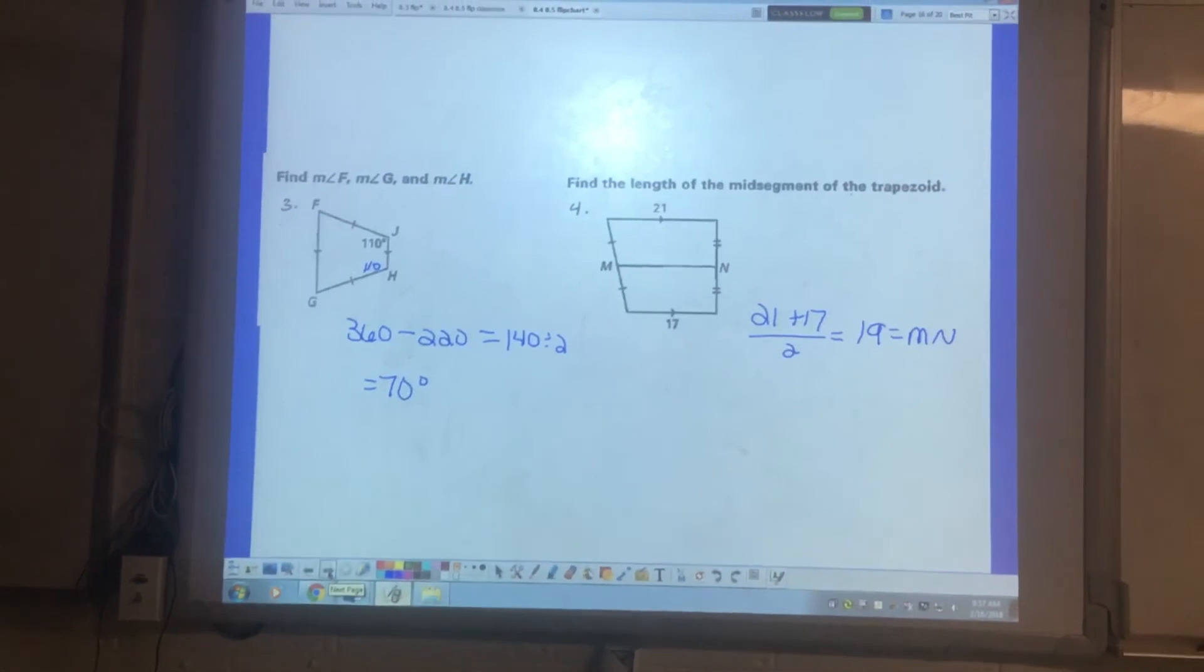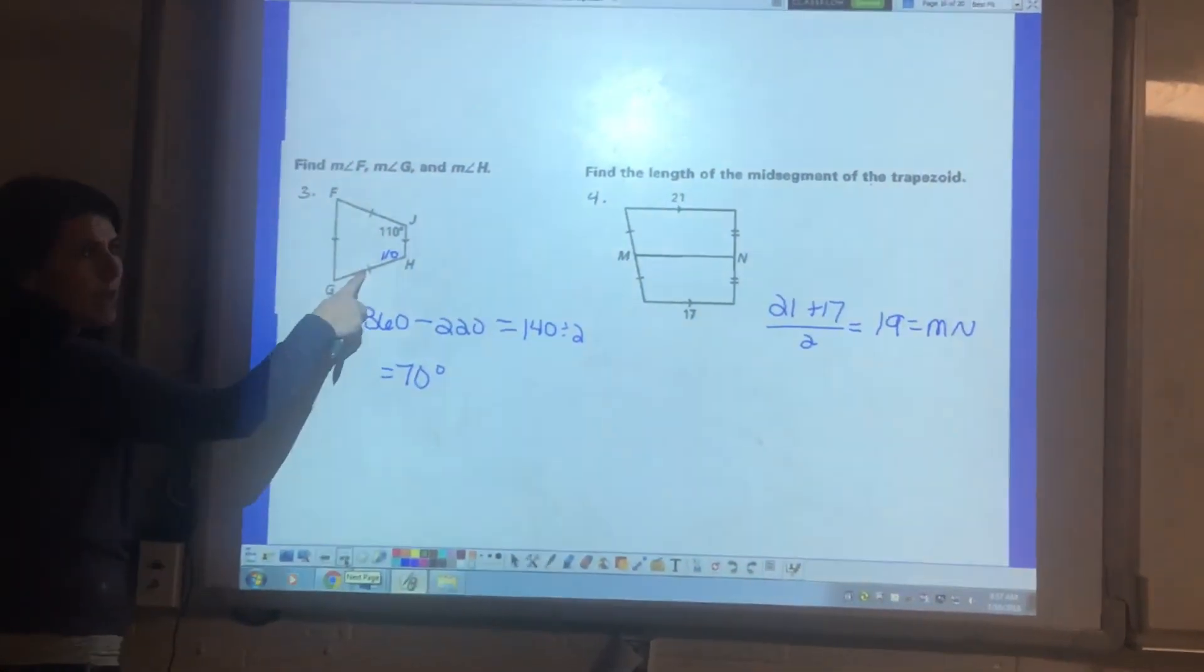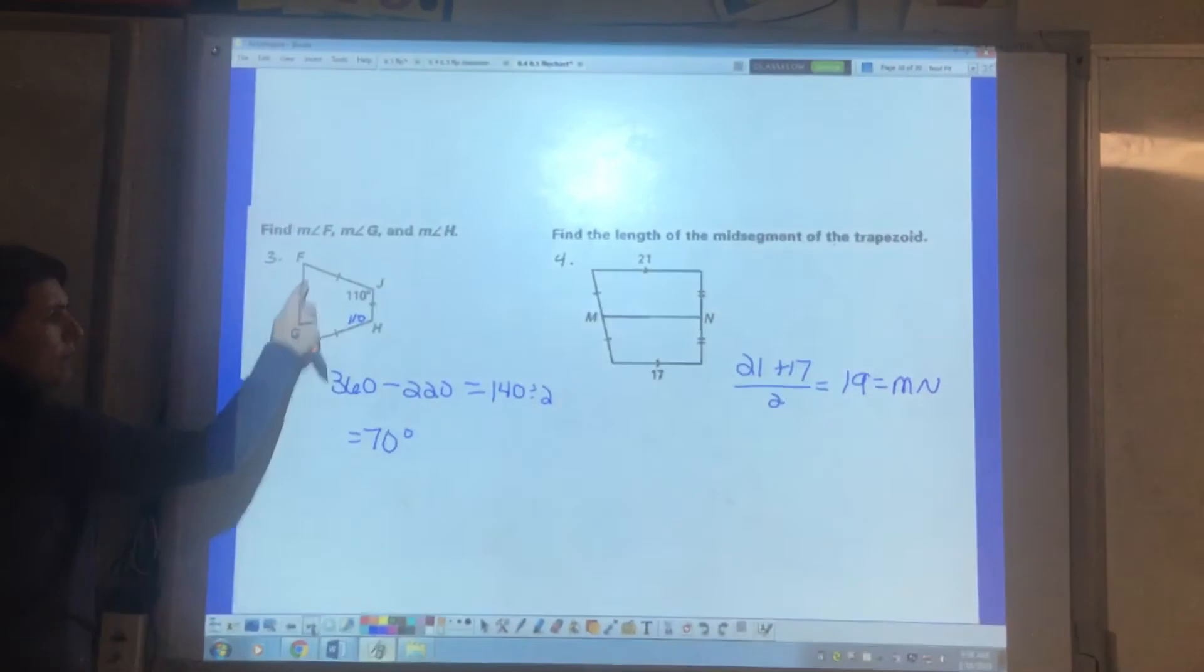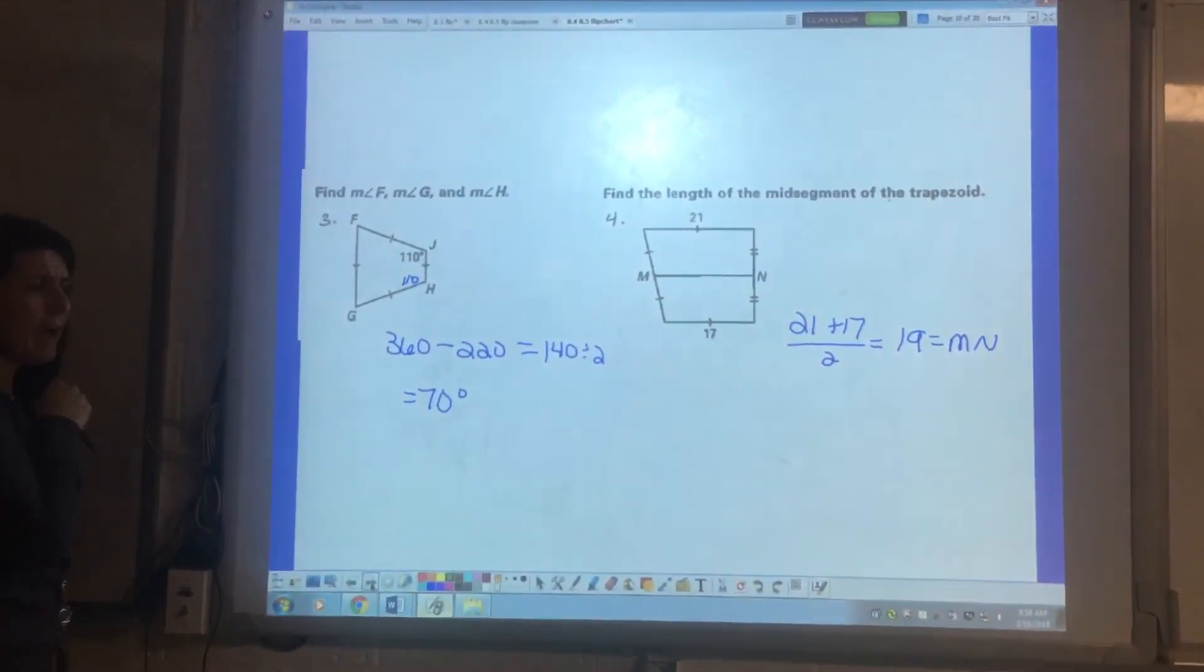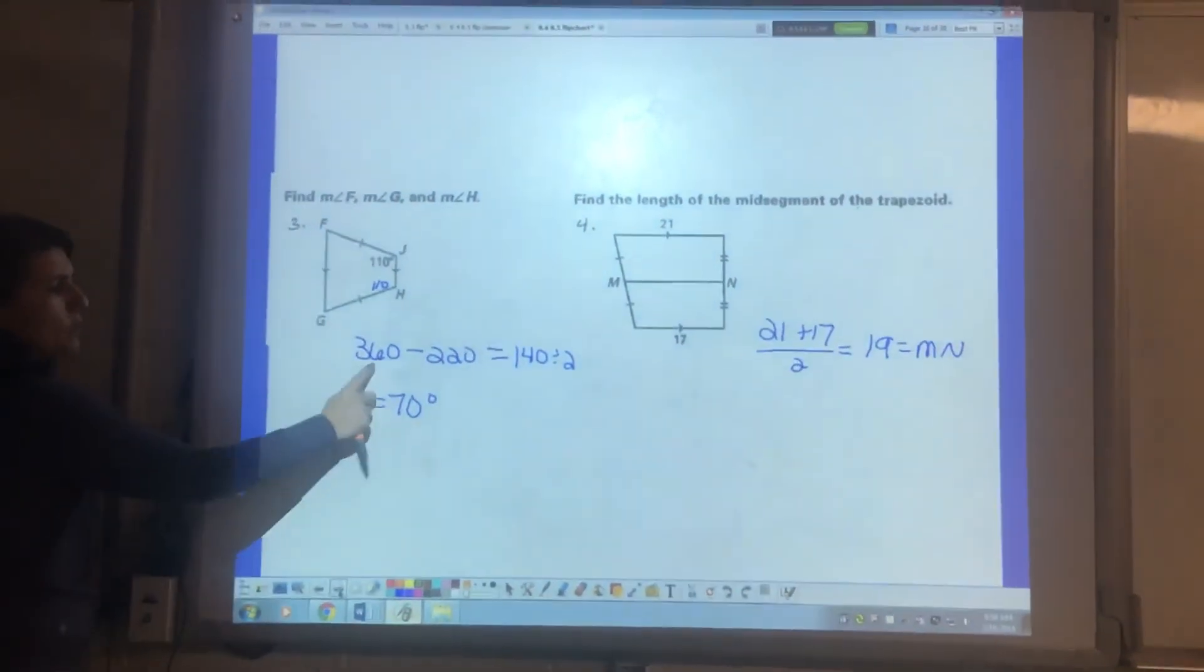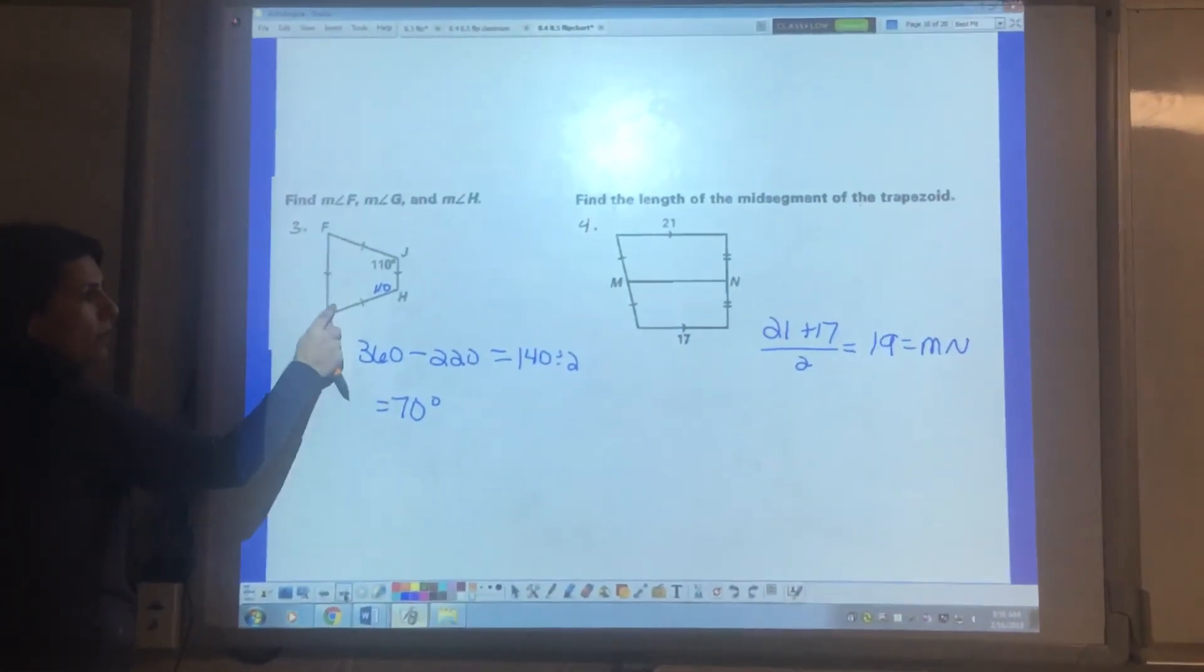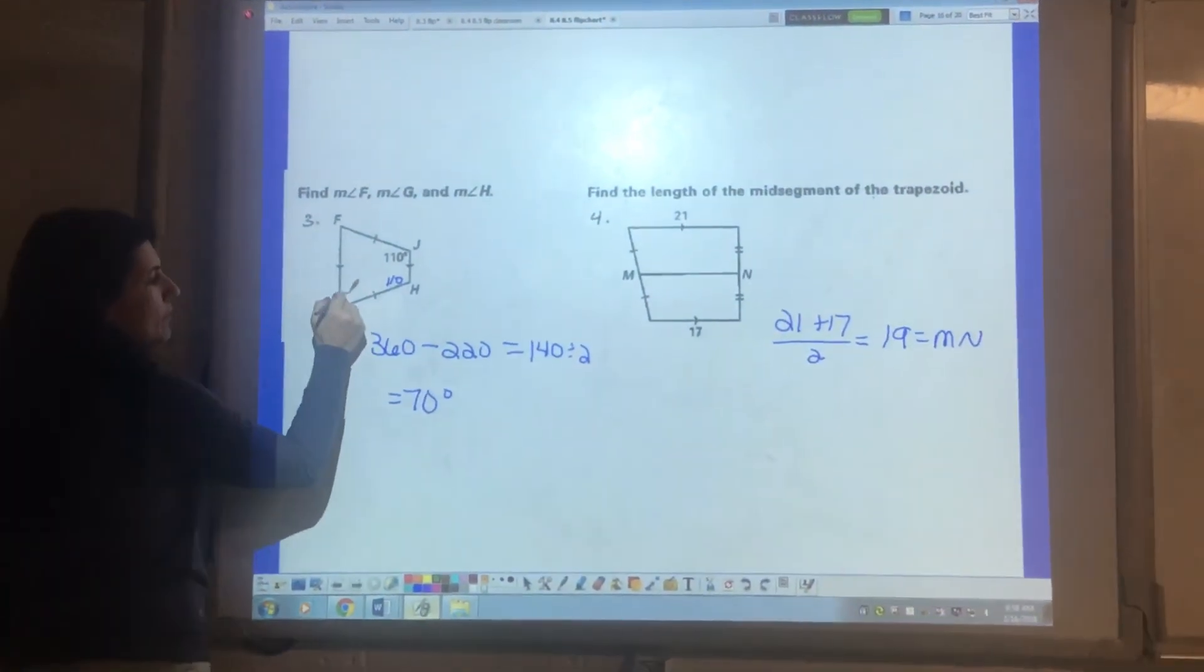For number three. This one's a trapezoid. We have actually it's an isosceles trapezoid because we have two base sides that are the same and we have parallel lines. Well what I did was say, I know these two are the same. And I also know that these two are the same. I know that it has four angles and they're going to have to add up to 360 because we talked about that in 8.1. So I took 360 and I subtracted 220 and I got 140. So 140 has to be split amongst these two angles. So when I divided it by two, these two angles are 70 degrees.